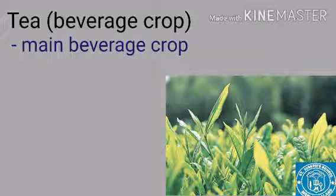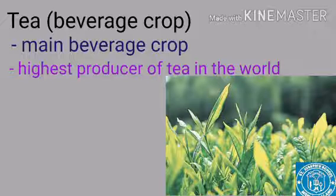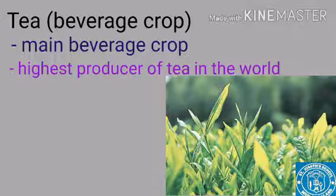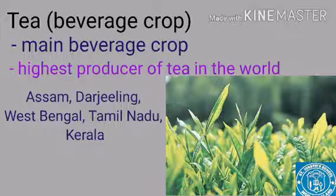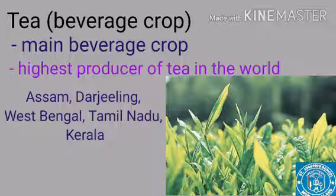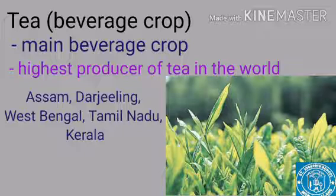The next crop is tea. Tea is the main beverages crop and India is the highest producer of tea in the world. Important tea-growing areas are Assam, Darjeeling, West Bengal, Tamil Nadu, and Kerala. It is also cultivated in Himachal Pradesh, Uttarakhand, Meghalaya, Andhra Pradesh, and Tripura. Tea requires a temperature of 20 to 30 degrees Celsius and annual rainfall of 150 to 300 centimeters, along with tropical conditions.